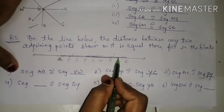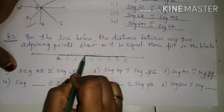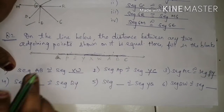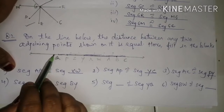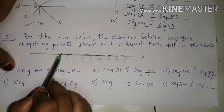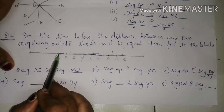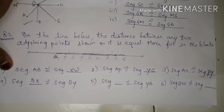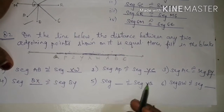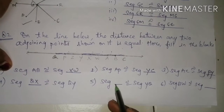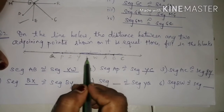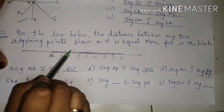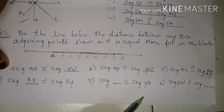Next blank: segment dash is congruent to segment BY. From B to Y: 1, 2, 3, 4 — that is 4 units. So I can take any two points 4 units apart, such as QX: 1, 2, 3, 4. So segment QX is the answer. For the fifth blank: segment dash is congruent to segment YQ. From Y to Q: 1, 2, 3 — that is 3 units.